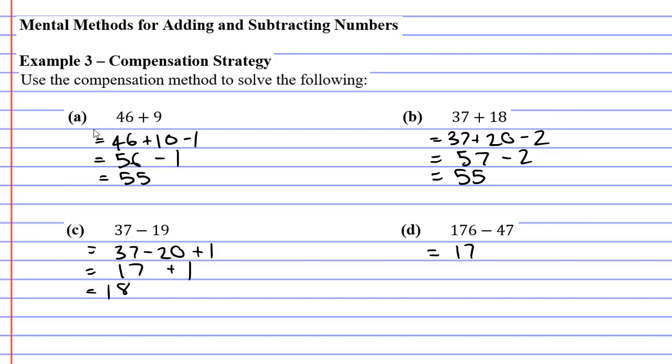Last question, 176, and I'm going to minus 50, and because it's subtraction I'm going to add the 3 at the end to make up for the fact that it's not 50, it's really 47. And 176 minus 50 is 126, and then if I add the 3 I get 129, and that's the end of our compensation strategy video.